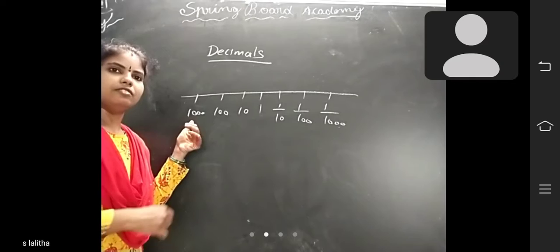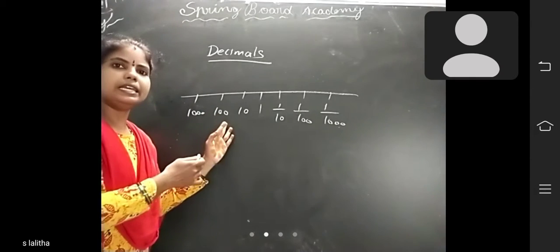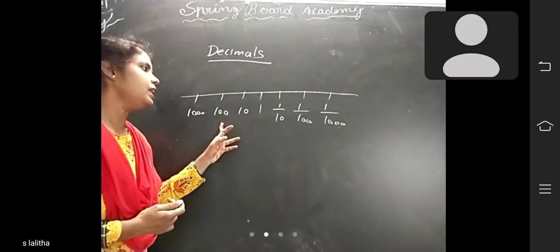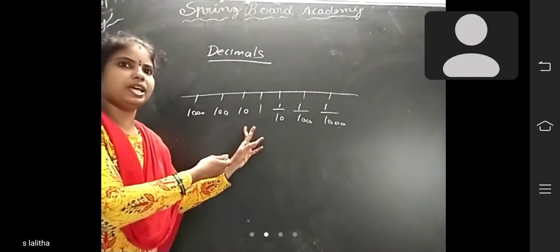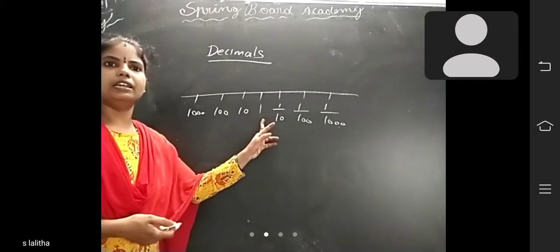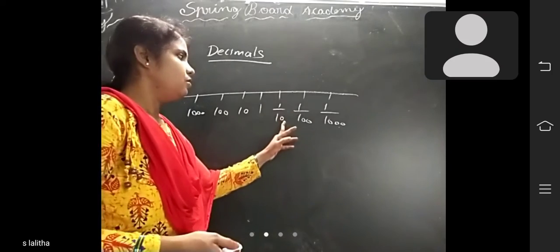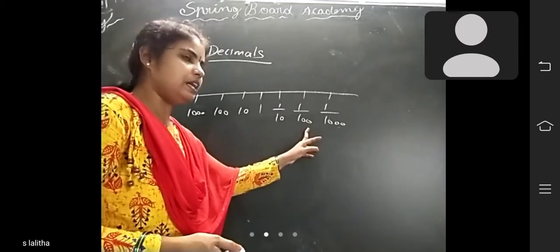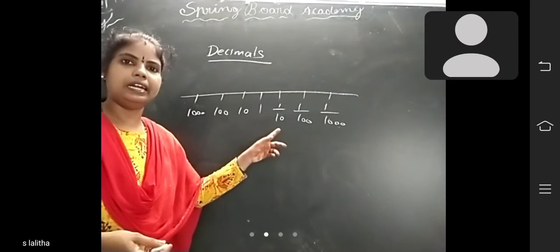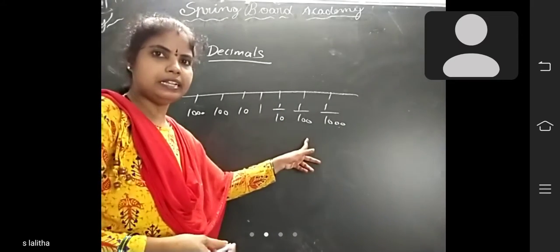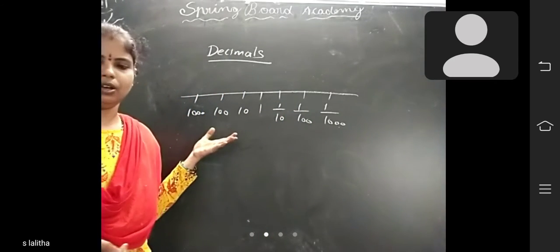See here — 1000 is there. Moving right, it decreases 10 times: 100, then 10, then 1. Then after the decimal point: 1/10th, 1/100th, 1/1000th. That is how you read the 1/10th, 1/100th, 1/1000th places.